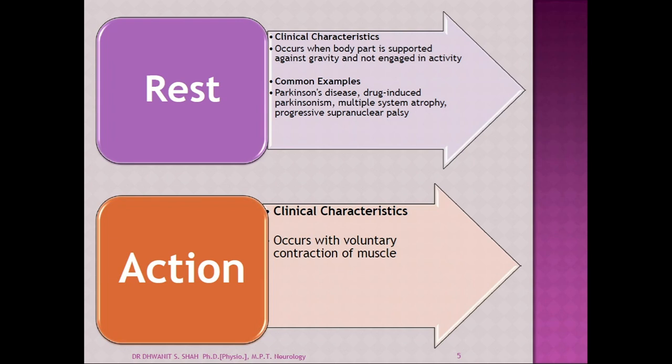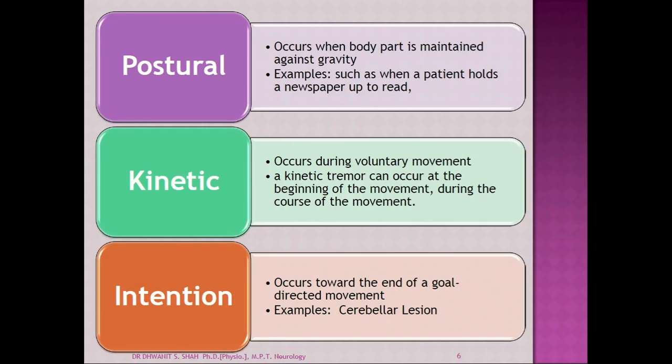If it is an action tremor, it occurs with the voluntary contraction of muscles. Within action tremor, we have the postural tremor, kinetic tremor, and intention tremor. Postural tremor occurs when the body part is maintained against gravity — for example, when a patient holds a newspaper, a glass of water, or any weight in the hand against gravity. This type of tremor is called postural tremor.